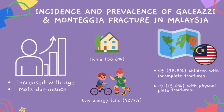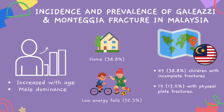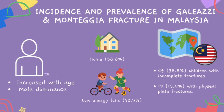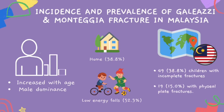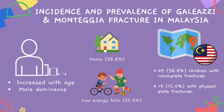For incidence and prevalence in Malaysia, the overall incidence of fracture increased with age, and male dominance was noted starting from school age. More fractures occur at home, with 38.8% and 52.3% of all fractures due to low energy falls. Sport injuries were mainly due to playing football, and road accidents due to riding bicycles. There were 49 children with incomplete fractures and 19 with greenstick fractures.